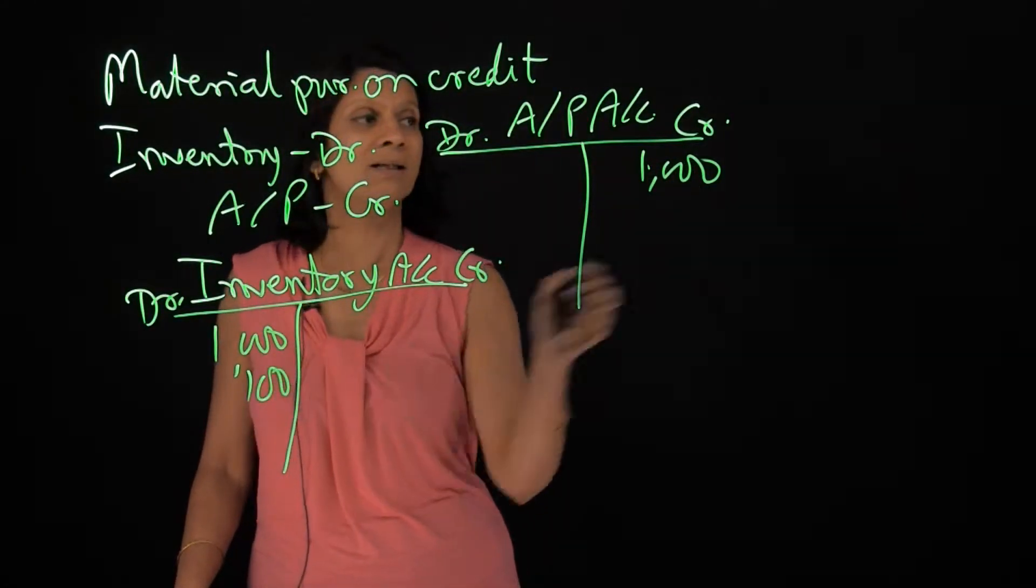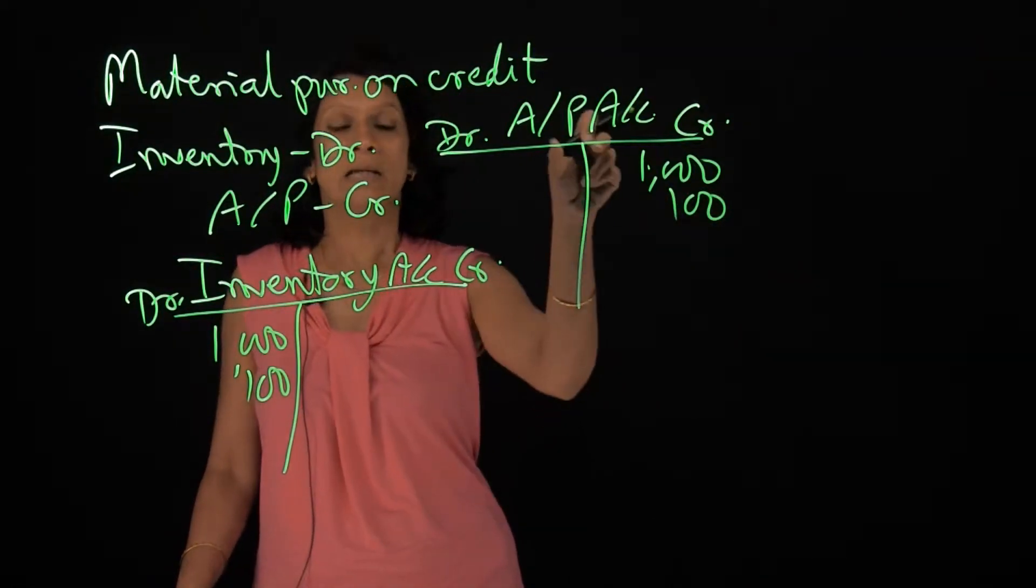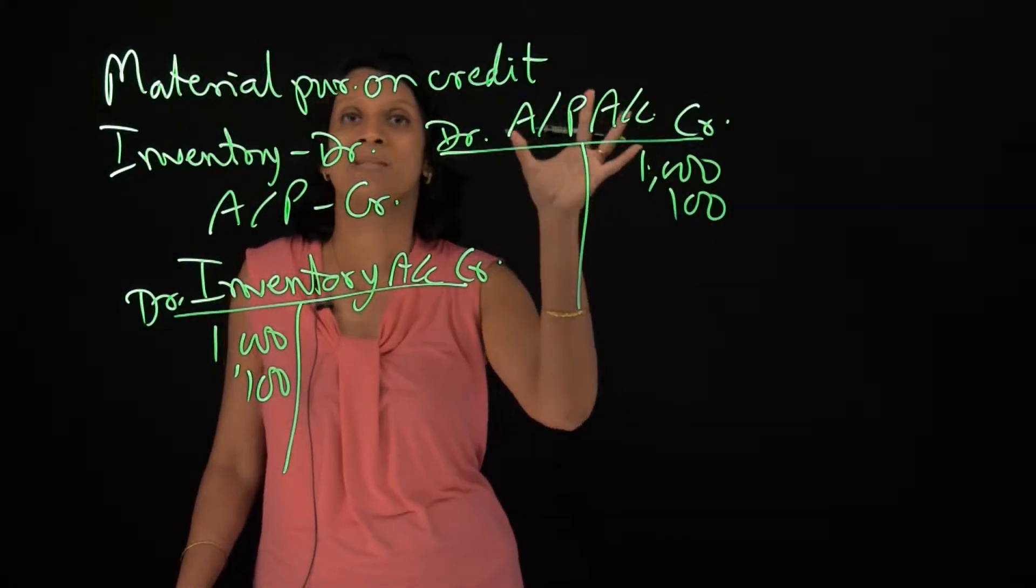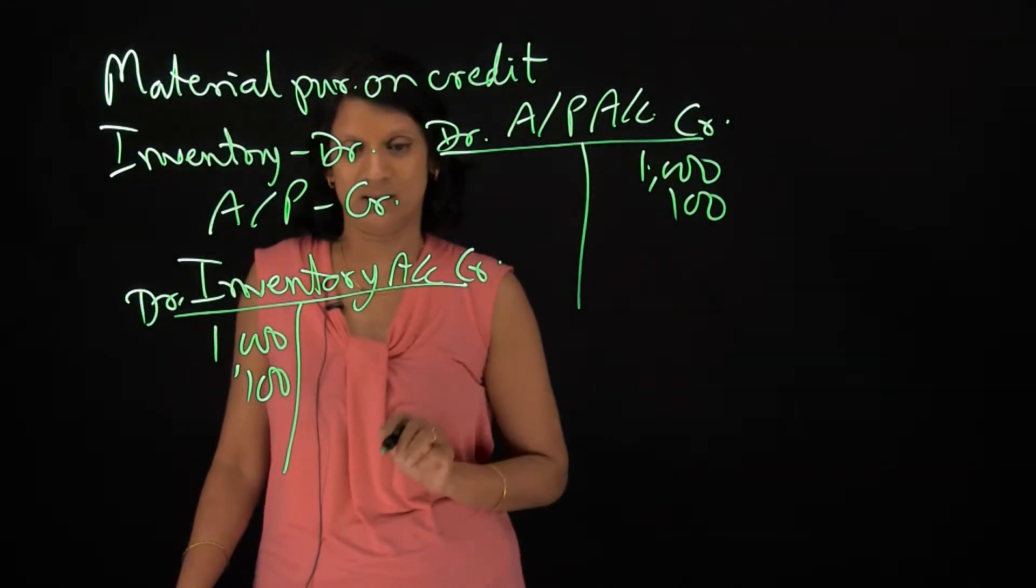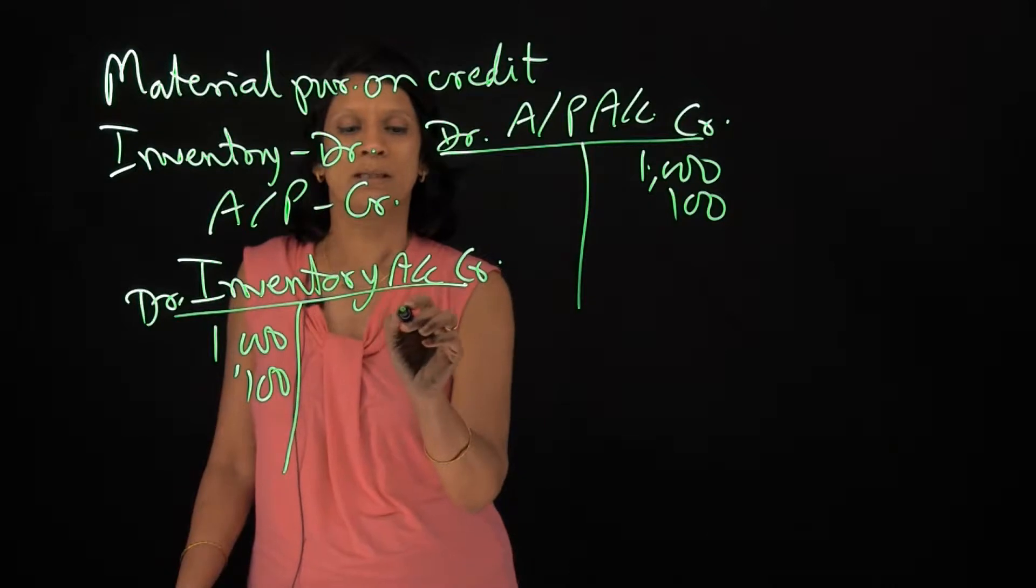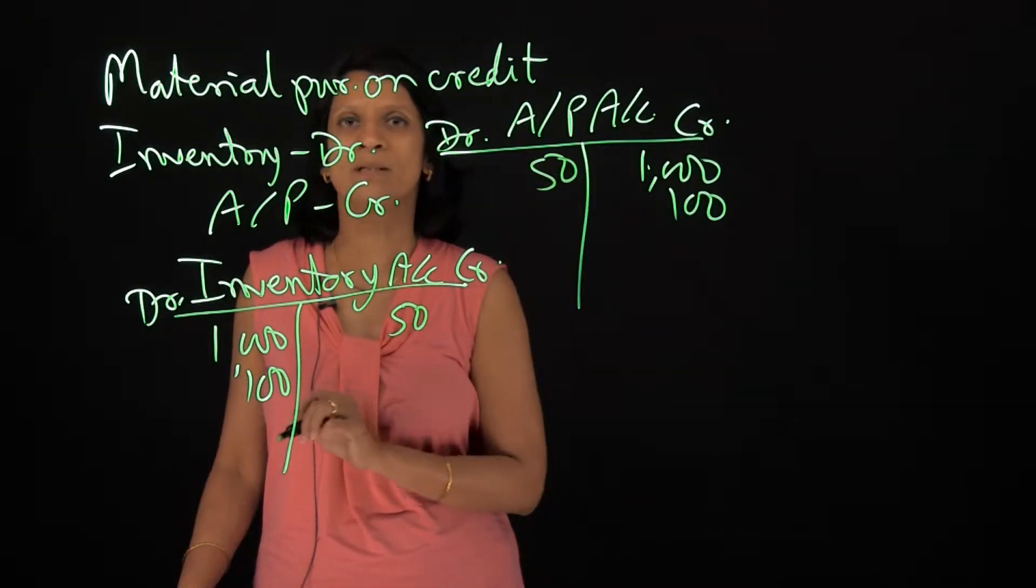So suppose again, I bought another $100 worth inventory from the same person. Every supplier will have a separate T account. Every inventory item will have a separate T account. And then suppose I returned something worth $50 to the person for some reason.